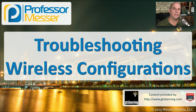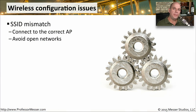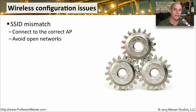There are many different configuration settings and variables when you start installing a wireless network, and in this video we'll look at how you can troubleshoot some of these configuration options. When you have multiple access points, you want people to be able to automatically roam from one access point to the other. To do that, you need to make sure that all of your access points have exactly the same SSID. If there's a difference between those SSIDs, you won't be able to seamlessly move from one to the other.